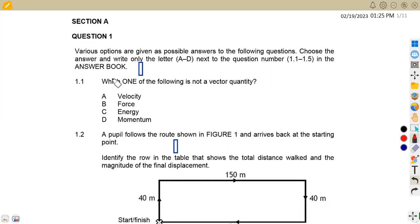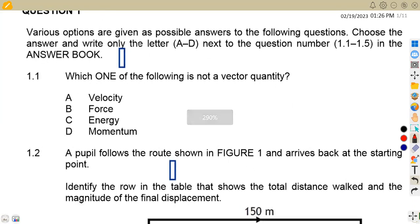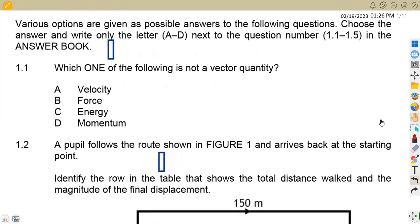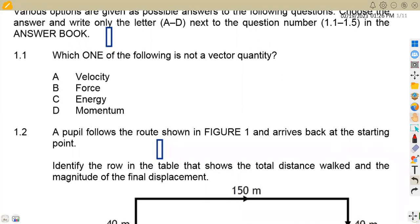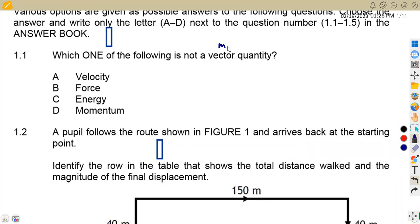On Question 1, we are given various options as possible answers to the following questions. Choose the answer and write only the letter A to D next to the question. On 1.1, which one of the following is not a vector quantity? Remember that a vector quantity possesses magnitude and direction.